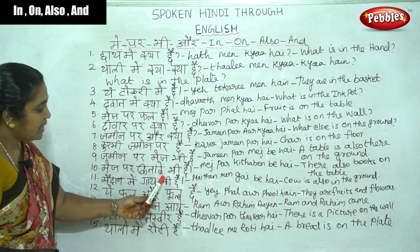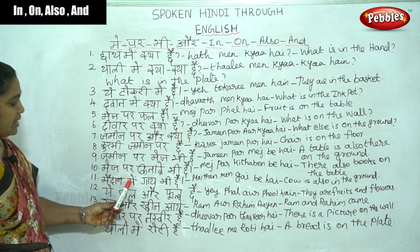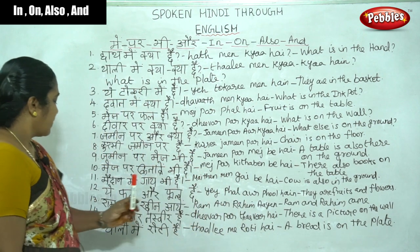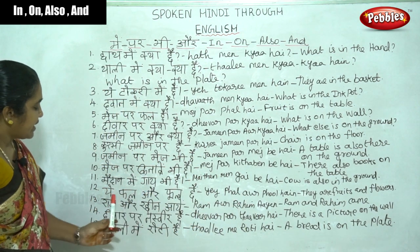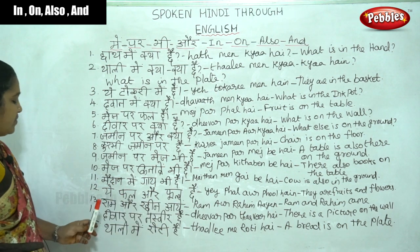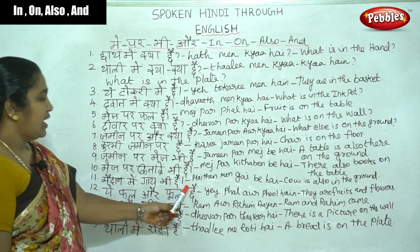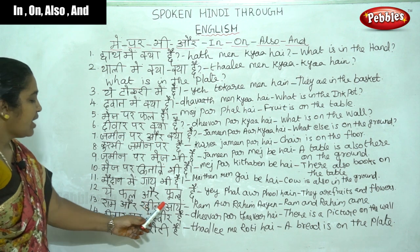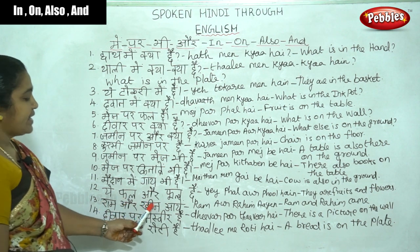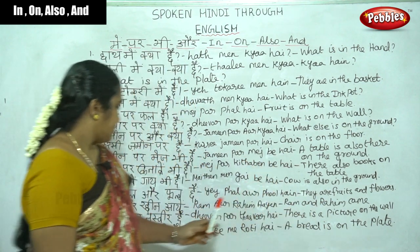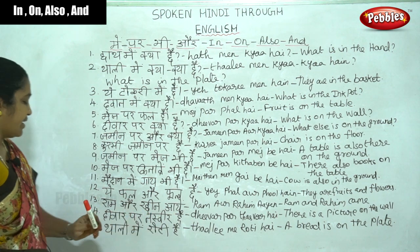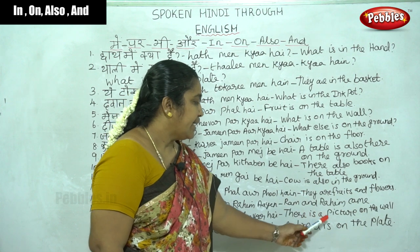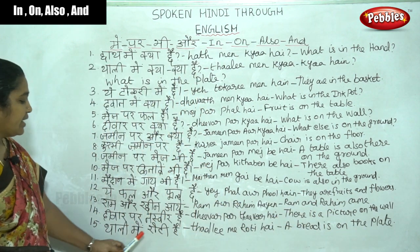Maidan me gai bi hai — cow is also in the ground. Gai means cow. Phal aur phool hai — they are fruits and flowers. Ram aur Rahim aye — Ram and Rahim came. There is a picture on the wall.